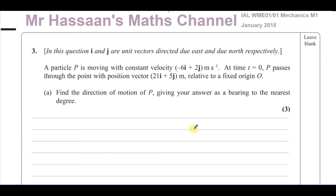In this type of question, a lot of people get confused as to which vector to use in order to give the direction that the object is moving in. That is because sometimes they don't understand what this topic is all about. We should try to understand the concepts and not just memorize how to deal with things. So when it says the particle is moving with velocity minus 6i plus 2j, this is describing the motion of the particle.